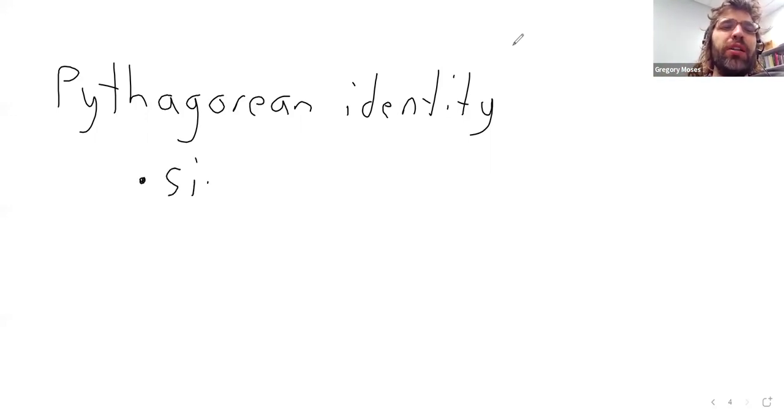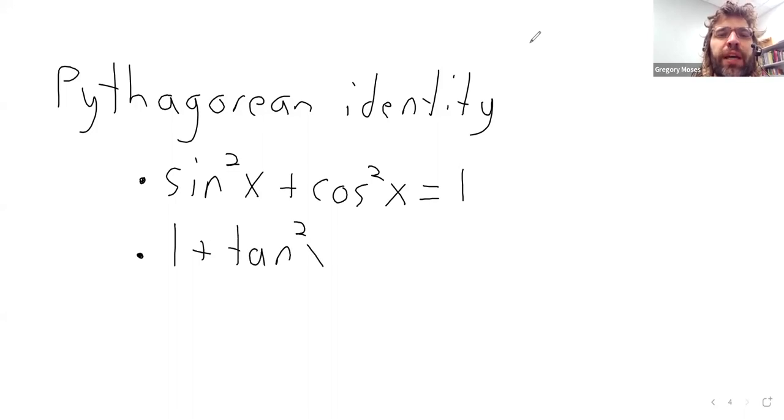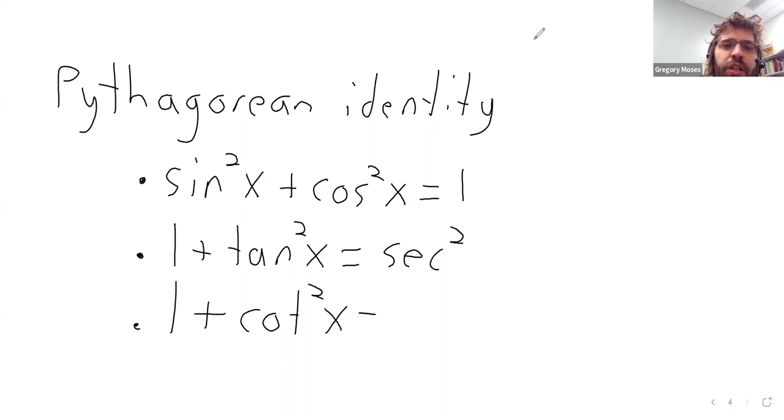The really famous one is that the sine squared plus the cosine squared equals one. But there's also one plus the tangent squared equals the secant squared, and one plus the cotangent squared equals the cosecant squared. And those are the Pythagorean identities.